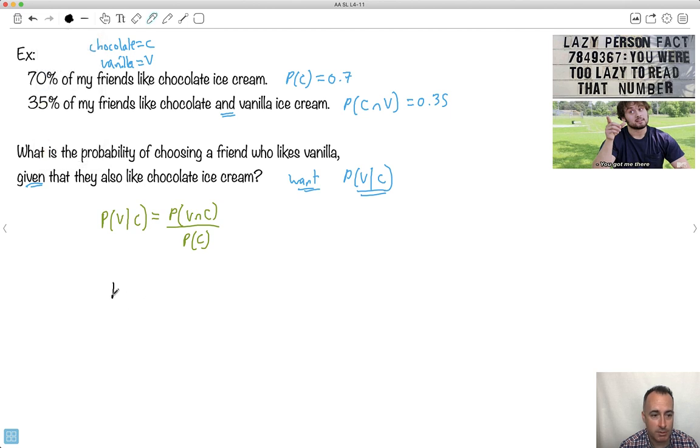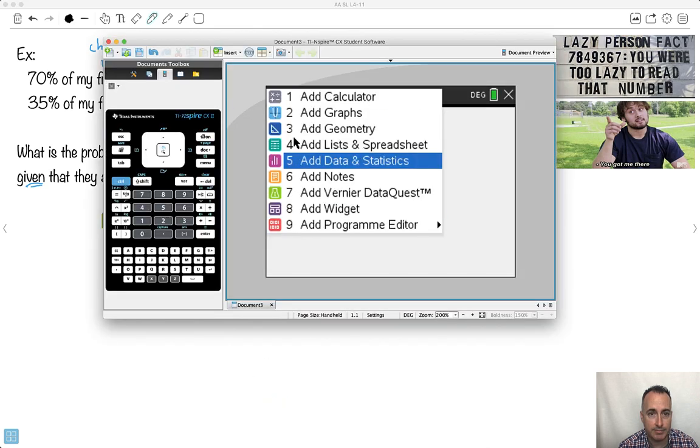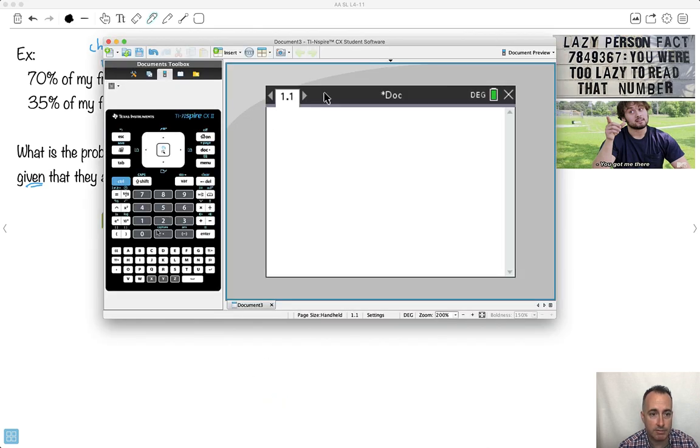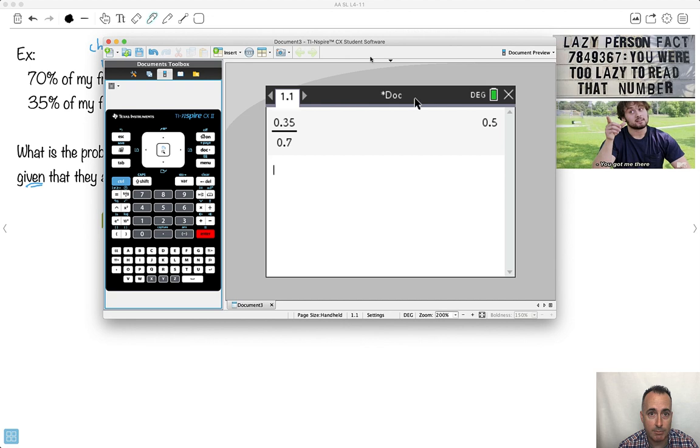I just want to show you the key to a lot of these questions is just decoding it. So that means the probability of vanilla given chocolate equals probability of vanilla and chocolate. I have that here. Look, C and V is the same as V and C. So that's 0.35. All that divided by probability of chocolate, which is 0.7. I just do that on my calculator. That's all I need to do. So 0.35 divided by 0.7, I get 0.5.